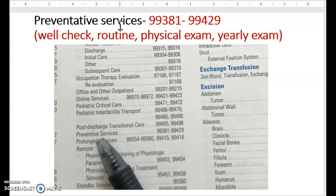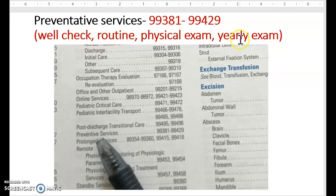Preventative medicine — we find it right here with the code range. Remember, preventative services is the main term you will look for anything documented as a well check, well-child check, routine, physical exam, or early exam, for any age of the person. You are always going to select preventative medicine — a very key point to remember.